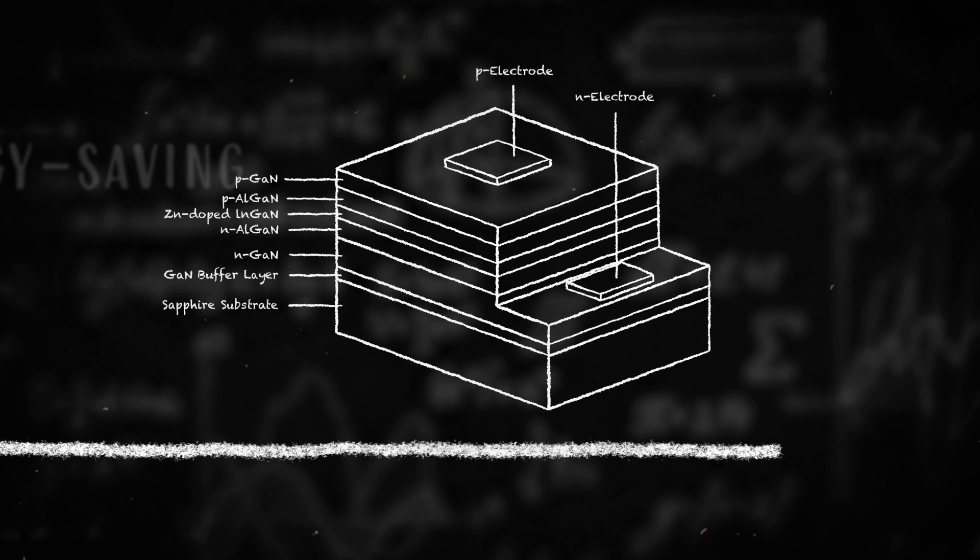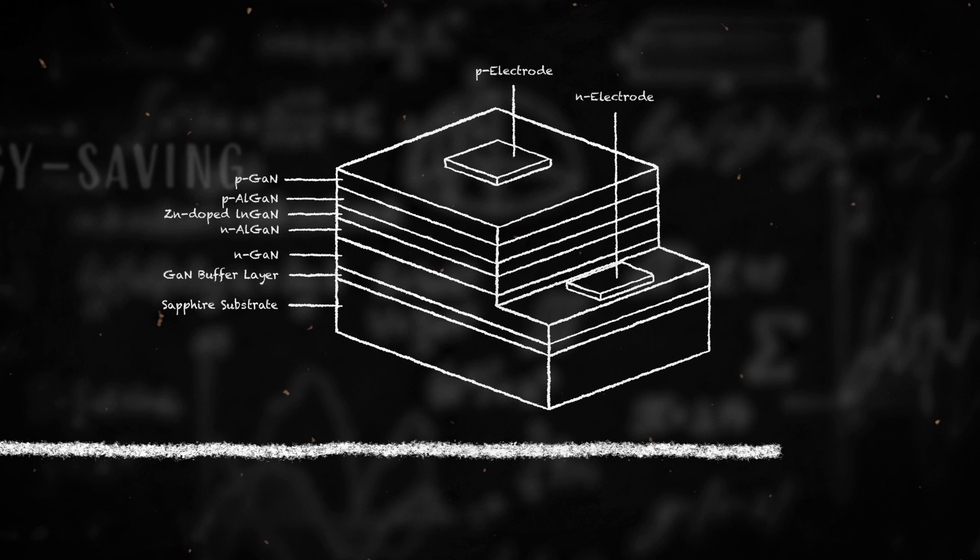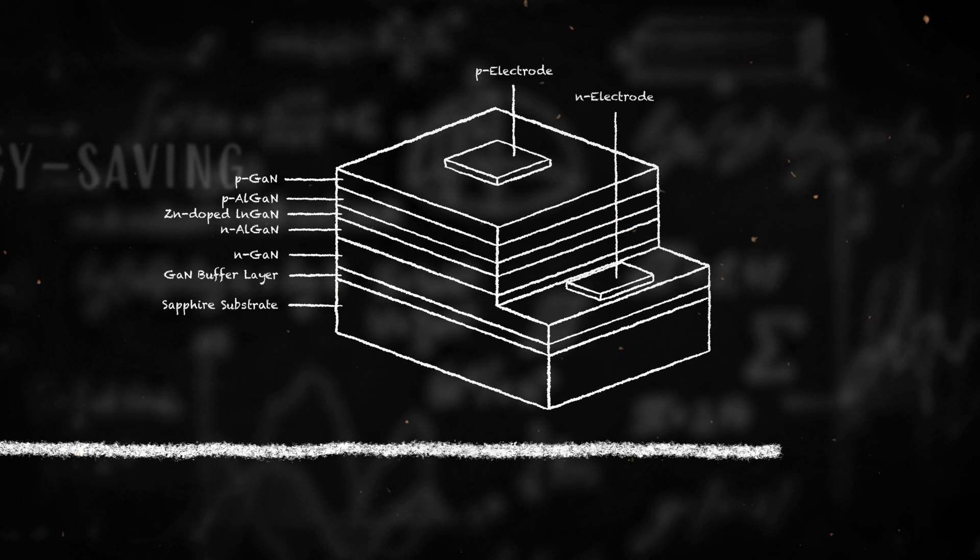In the late 80s, Akasaki and Amano achieved a high-quality GaN crystal while Nakamura improved its quality, efficiency, and brightness in the early 90s.